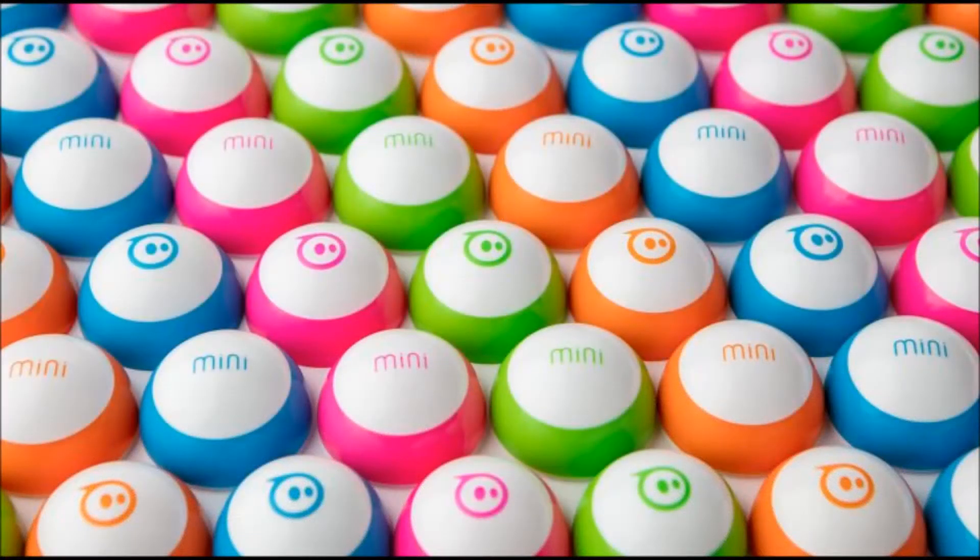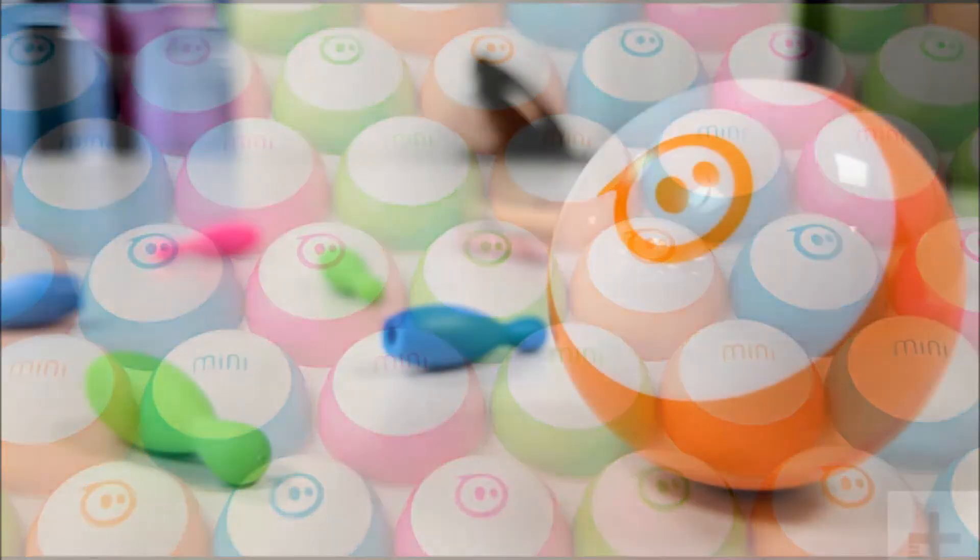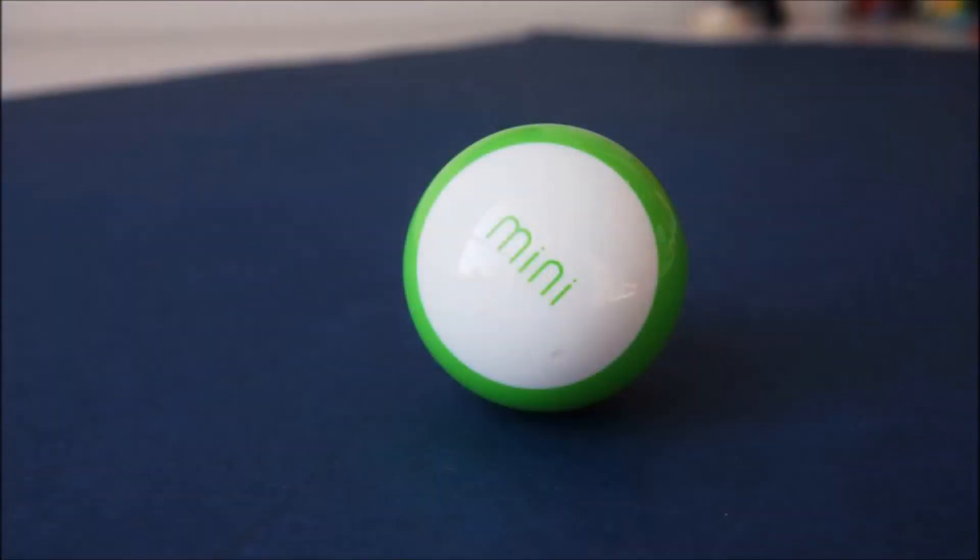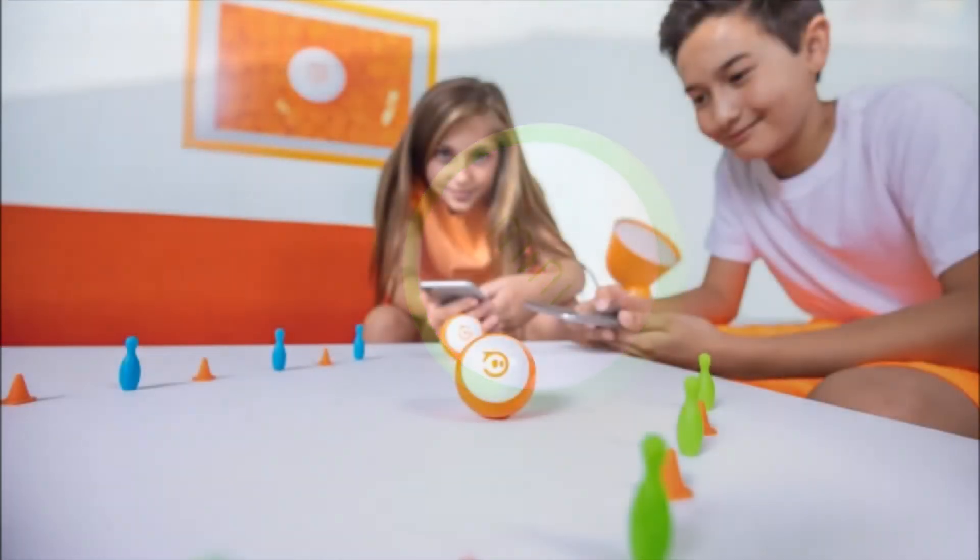The Sphero Mini is a smaller version of Sphero's educational SPRK Plus product which provides users with opportunities to create, contribute and learn while having fun with the robot. After programming the actions into their device, the ball can then be moved at up to 1.5 meters per second using the app.